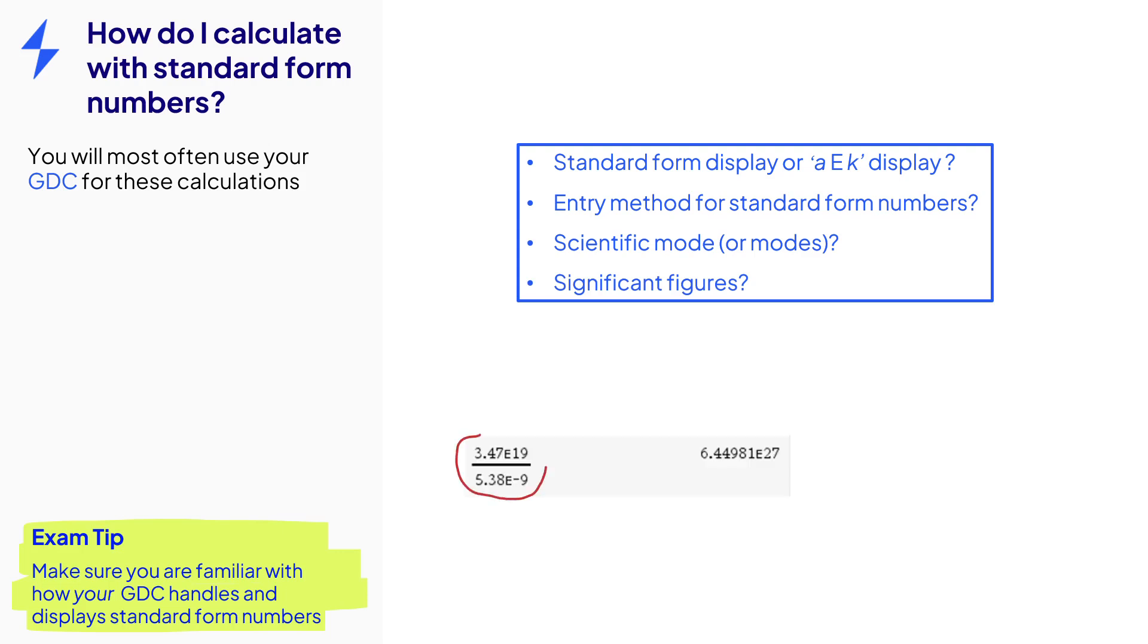So here is a calculation that's been put into the calculator. The calculator gives us this as the answer. And there are two things to note. First of all, that's not an exact answer. The exact answer is 6.44981412... times 10 to the power of 27. The calculator has already rounded it off to six significant figures. But for your answers, you're usually going to want three significant figures. So don't forget to round your answers.